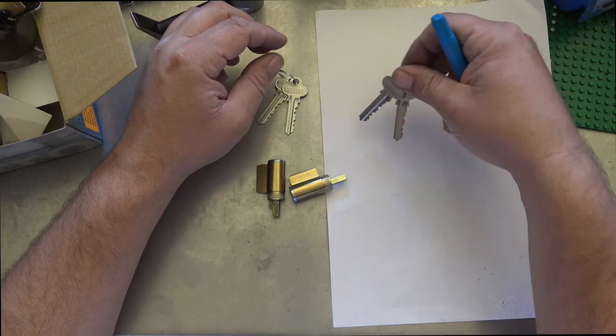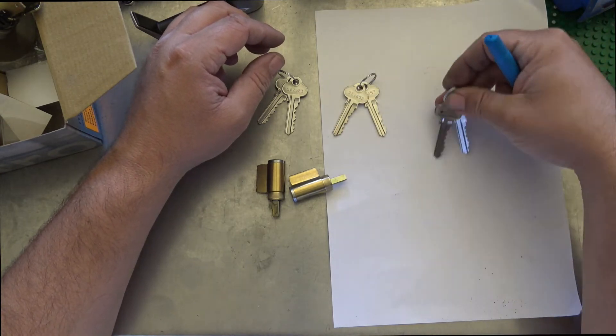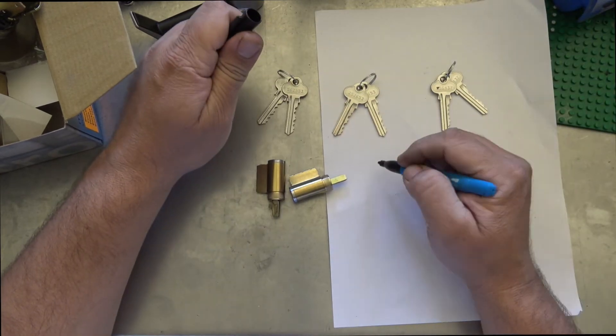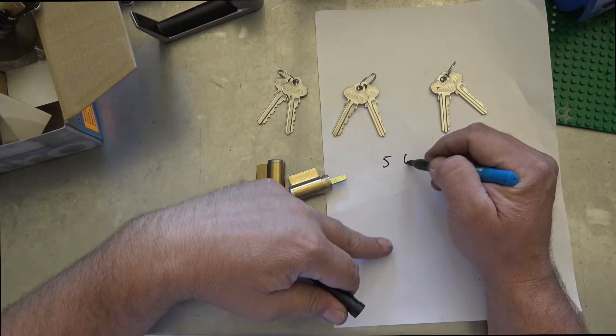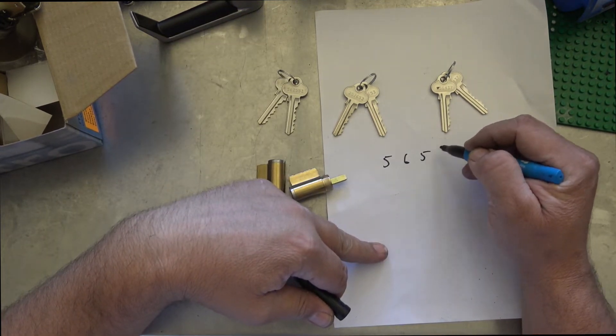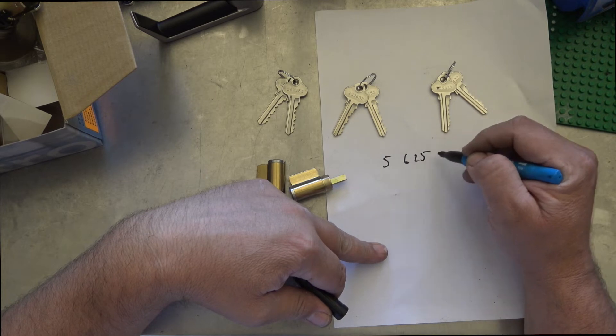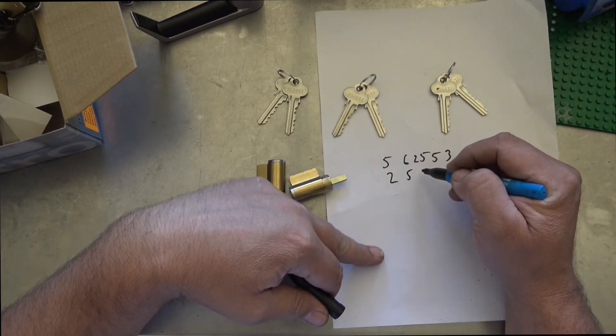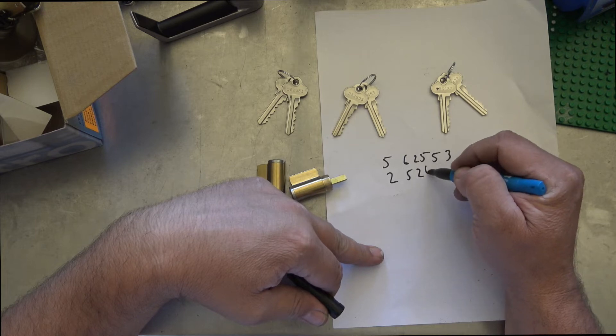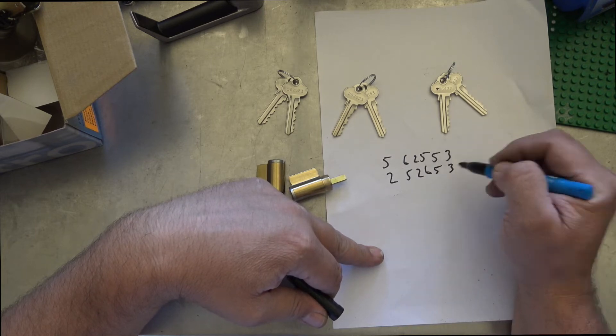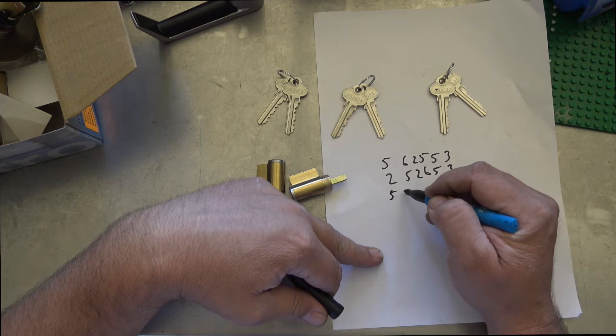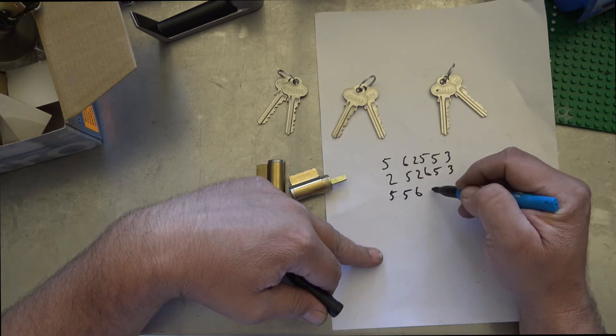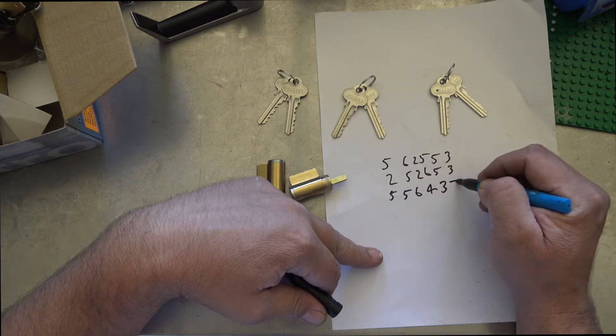Okay, so I'm going to look at the code and the code's actually stamped on the back of these ones. Okay, and I'm going to write the codes down. So we have 5 6 5, sorry 2 5 3, and then we have 2 5 2 6 5 3, and we have 5 5 6 4 3 7.